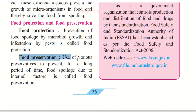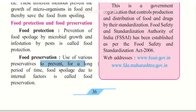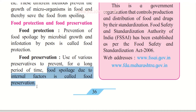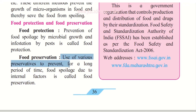What is food preservation? It is the use of various preservatives — either organic or chemical preservatives — which are safe for the food and prevent spoilage for a long period of time. Food spoilage due to internal factors is addressed by food preservation, where we use these preservatives to keep food good for a long time.